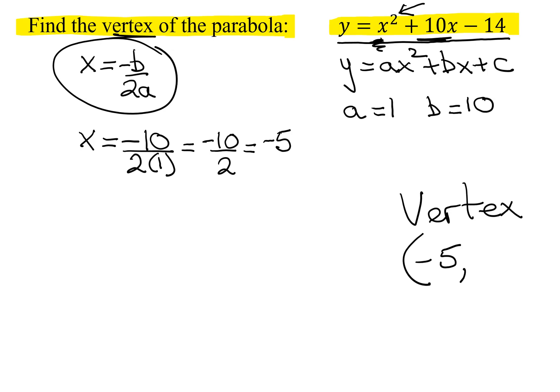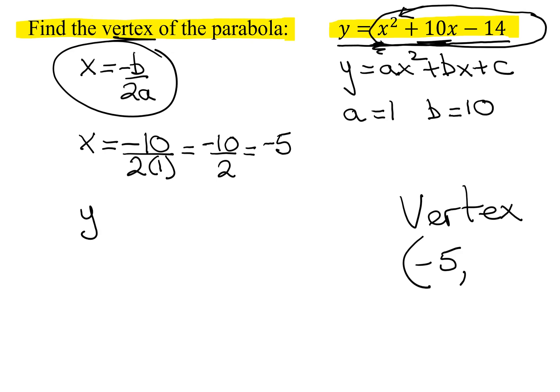Now all I need to do is find the y-value. We do that by plugging the x-value of the vertex into this equation. So I get y equals x, which is negative 5, all squared. So I'm putting x equals negative 5 here and here, plus 10 times negative 5 minus 14.